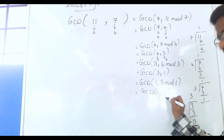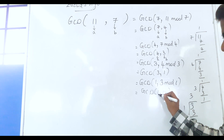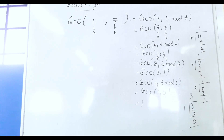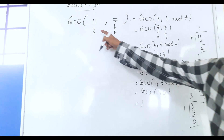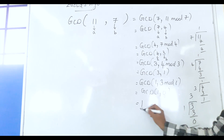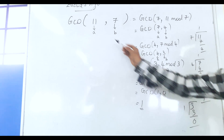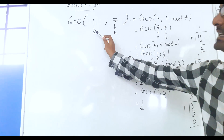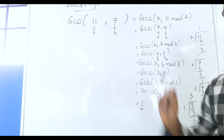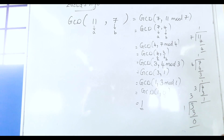When the second parameter is 0, whatever is in the first parameter is the GCD. So GCD of 11, 7 is equal to 1. It means 1 is the only number that can divide both 11 and 7. Thank you.